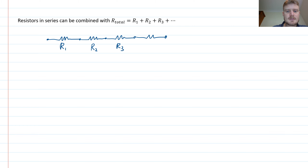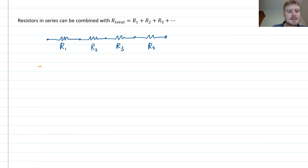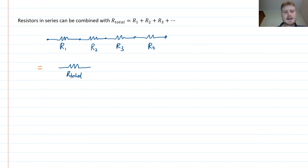If I label these, I could have R1, R2, R3, R4 — meaning the resistance in ohms, so 1 kilo ohm or 10 kilo ohms, whatever those values actually are. This entire network can be simplified into one resistor with a new value, which I'll call R total. This thing is equivalent to one resistor, and R total is given by the sum of all the resistors that make up that chain in series.